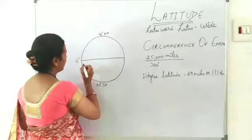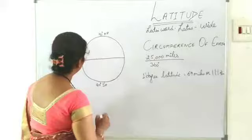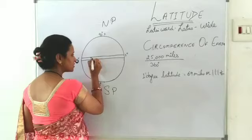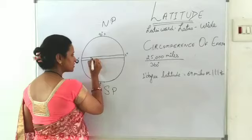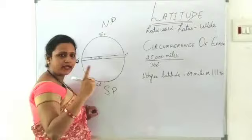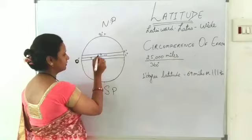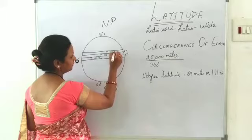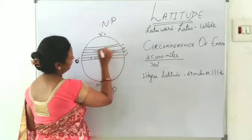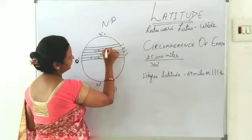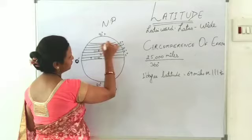As we discussed earlier, the equator is at 0 degrees. This is our north pole and this is our south pole. If we move 1 degree towards the north pole, that means 111 kilometers. We draw a parallel line, move another 111 kilometers — 2 degrees. Then again 111 kilometers — 3 degrees, 4 degrees, 5 degrees, and so on, right till 90 degrees towards the north pole.